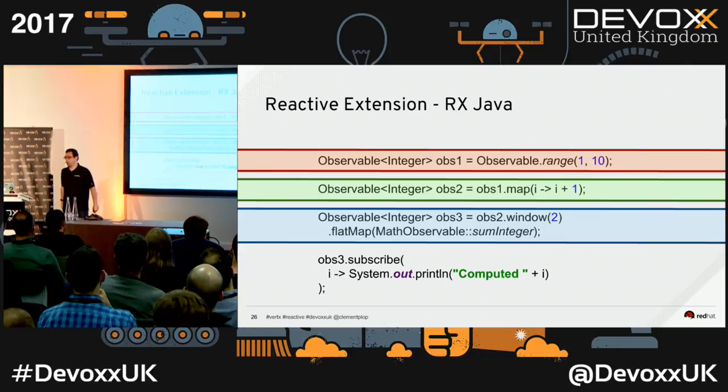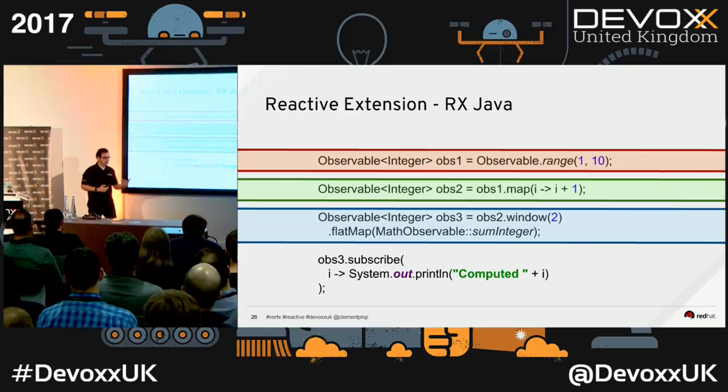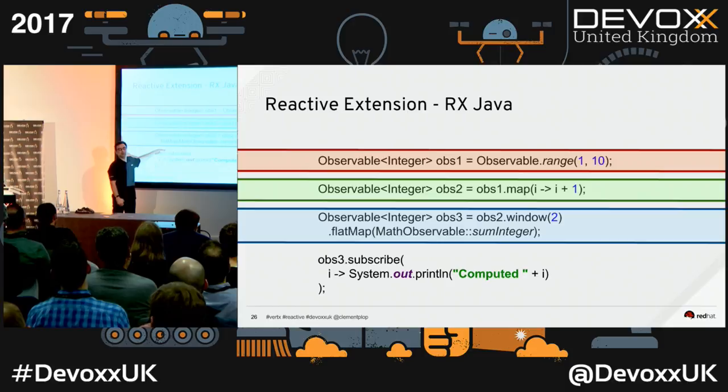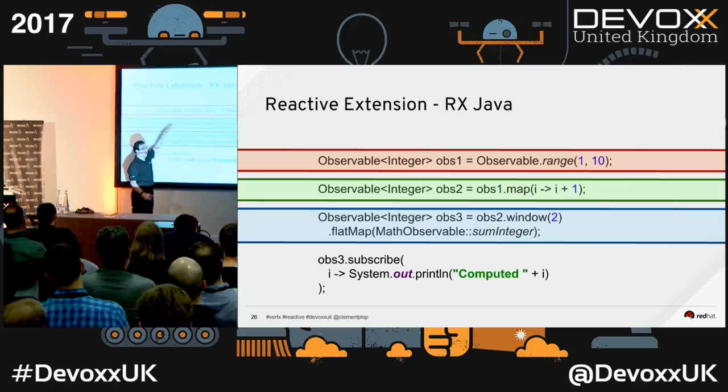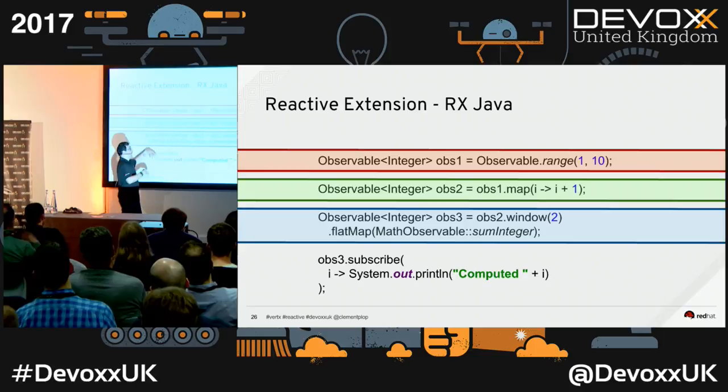Something very confusing the first time you use RxJava: if you stop without subscribing, nothing is going to happen. By default you just create the structure but don't instantiate it. When you subscribe, it materializes the pipeline and gets things through.